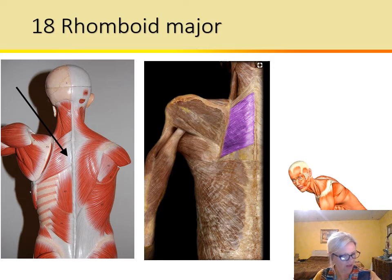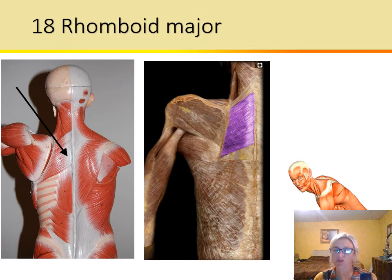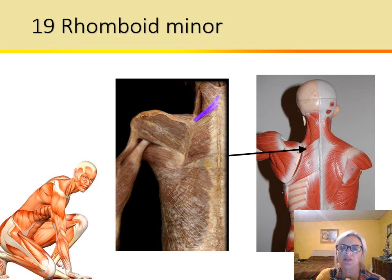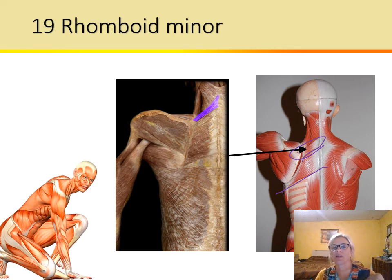The rhomboid major — a rhombus is an equilateral parallelogram. This retracts, elevates, and rotates the scapula inferiorly. We also have the rhomboid minor, which is the smaller one sitting on top, and the major is beneath. The rhomboid minor also helps retract, elevate, and rotate the scapula inferiorly.